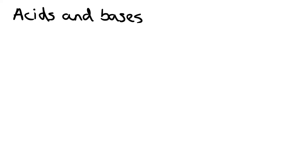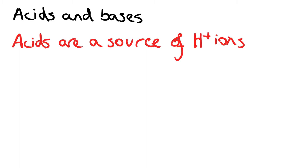In this video we're going to be looking at the theory of acids and bases. We're probably used to thinking about acids and bases from a young age, thinking that they have various properties such as the corrosive nature of acids, a bitter taste, etc. But here we're going to look at the general theory of acids through two definitions. First of all, all acids are a source of H+ ions — that's the main thing.